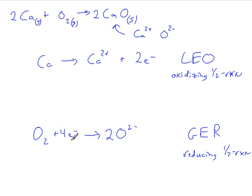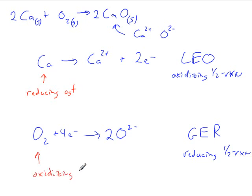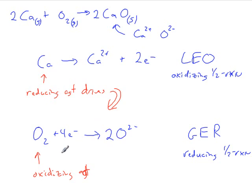The electrons lost here drive the reduction reaction — think of it that way: they drive the reduction reaction. So we would say that this is a reducing agent, and this is the oxidizing agent. Remember: the species that's being reduced is the oxidizing agent, and the species that's being oxidized is the reducing agent. The reducing agent drives the reduction reaction by losing electrons, which then forces the oxygen to be reduced.